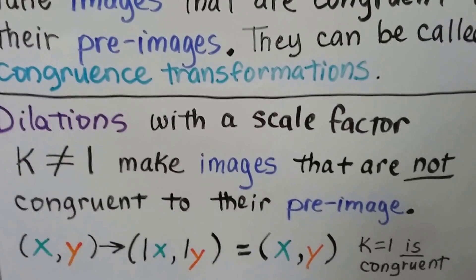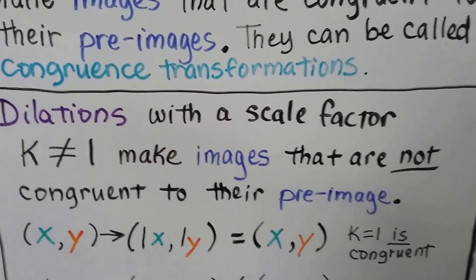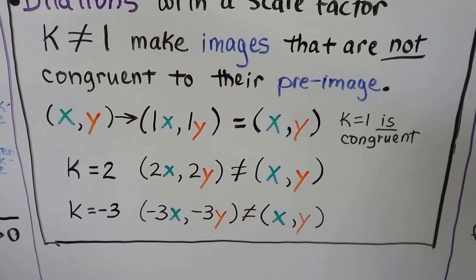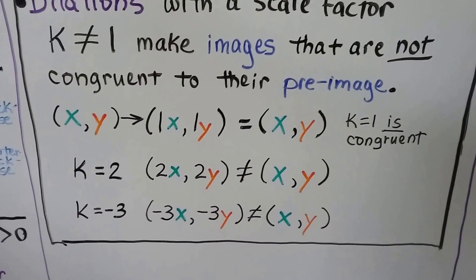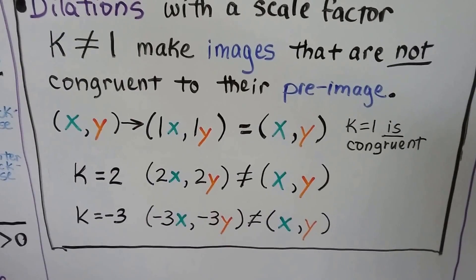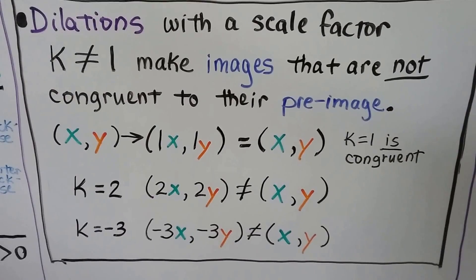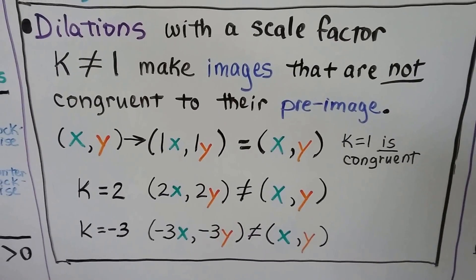So a dilation, and it wouldn't be a dilation, so k is not equal to 1. So if k was 2, we'd have 2x, 2y. They'd be multiplied by 2. If we had negative 3, we'd have negative 3x and negative 3y. They'd be multiplied by negative 3. And then it would be a dilation. They would not be congruent.